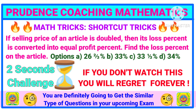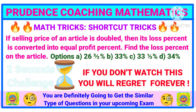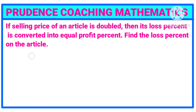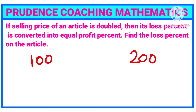For solving any arithmetic problem, you need to understand the meaning of the concept hidden in the question — don't just go for the formula first. You need to understand whatever is given. Here, if the selling price of an article is doubled, let us assume the selling price is 100 rupees. Doubling it means 100 into 2, giving us 200.